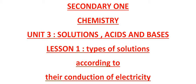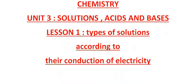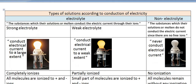Hello students. Secondary one chemistry — we are still in unit 3, solutions, acids and bases. The lesson now is types of solutions according to the conduction of electricity. When you have a solution dissolved in a solvent, if the solution contains free ions produced by the separation or dissociation of the solute particles, and these ions conduct electricity, this solution is called an electrolyte.